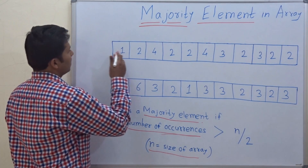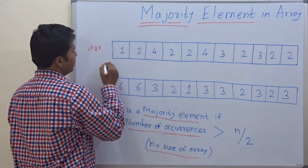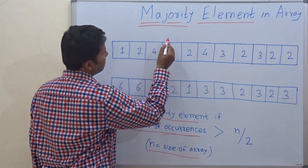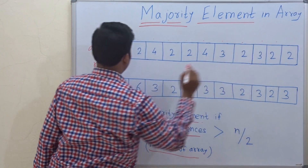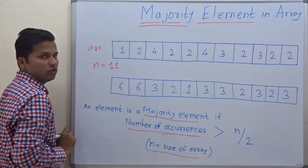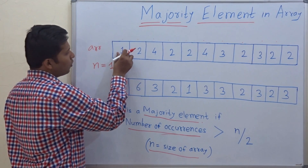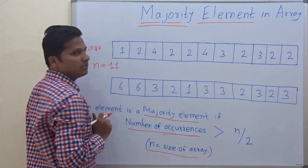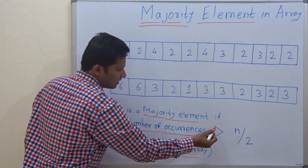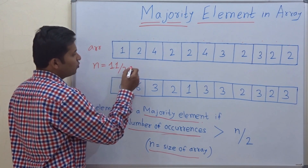Suppose this is the array and n is the size of this array. The size of this array is 11, so n is equal to 11. Now you have to count the number of occurrences of each element, and the element whose occurrence is greater than n/2 — that is 11/2, which equals 5.